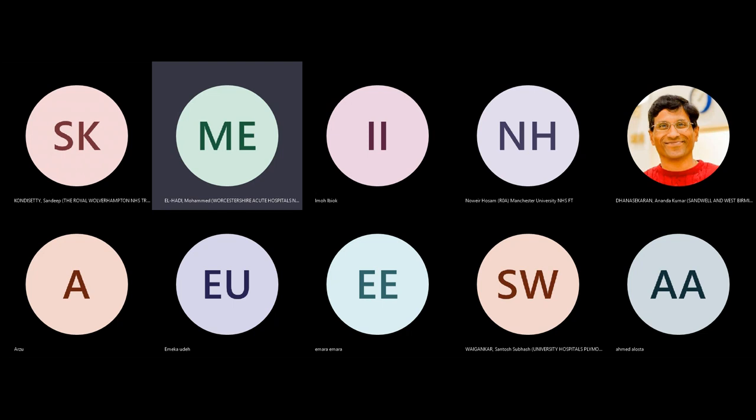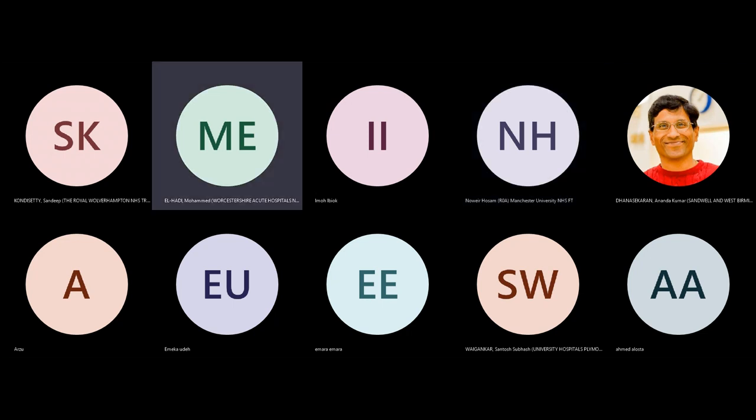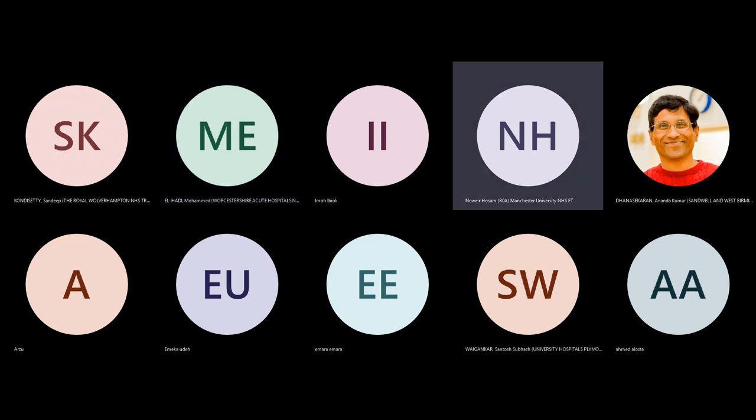Which basket are you going to use? I'm aware it's safe to use tipless catheters in the ureter. In my practice I use an N-Gage 2.2 French. The stone is 7mm and impacted — are you going to basket it first? No, I'm going to use the laser first.